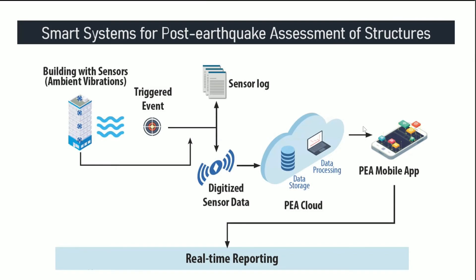Another application involves using sensors from major buildings, bringing the data back, calibrating the models, and then using that as a learning process to find out what is typically deficient in models — why models do not match reality. What parameters are wrong? Is it the modulus of elasticity, the cracking factors, the estimation of density, or the thicknesses? Which parameters affect the stiffness and mass of the structure in a way that doesn't match reality? We can use sensor data not just for specific projects, but to identify the parameters we should concentrate on and improve.